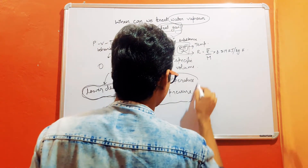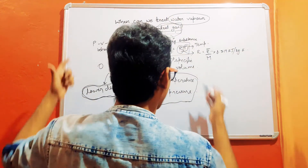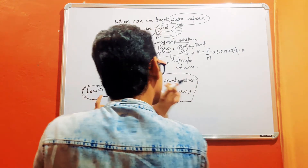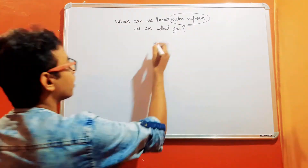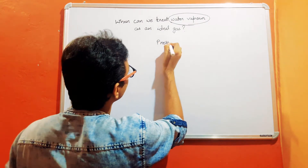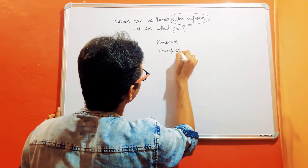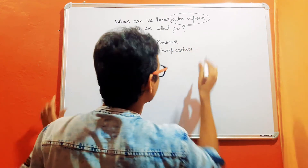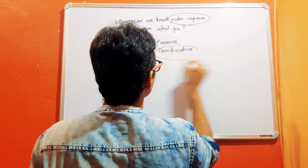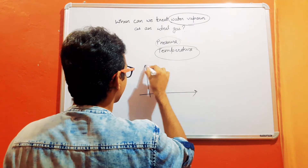But what constitutes high or low pressure, and high temperature? The question arises: how much high temperature or how much low pressure? The pressure and temperature of a substance or gas is considered high or low relative to its critical point temperature and pressure.